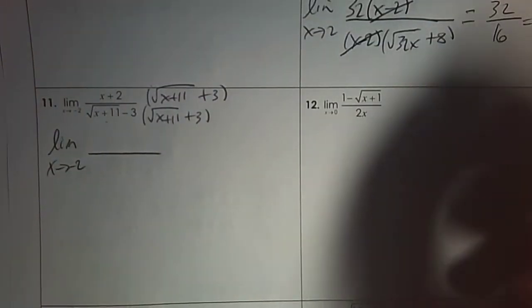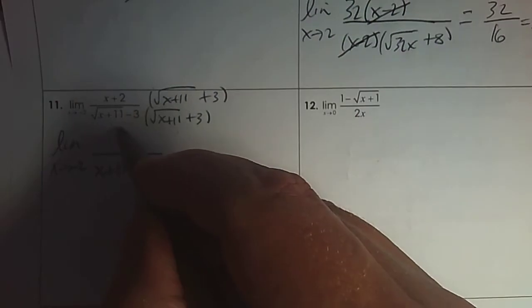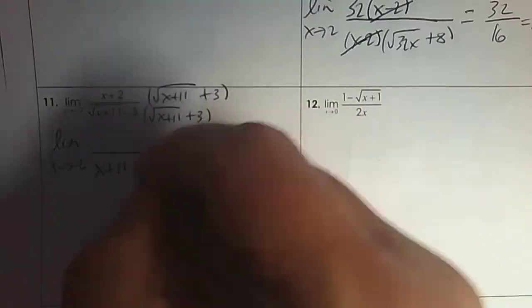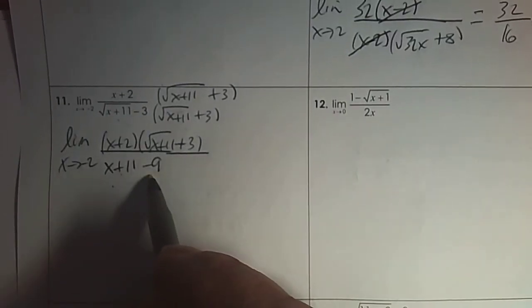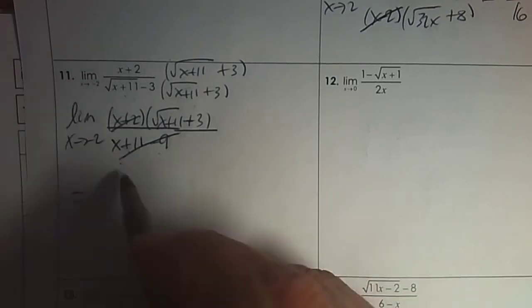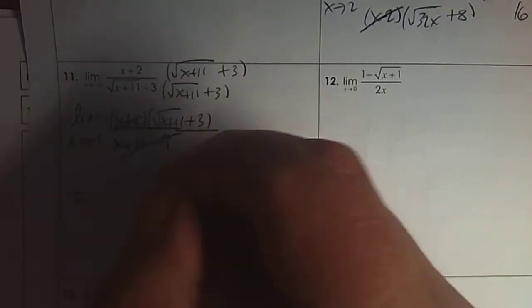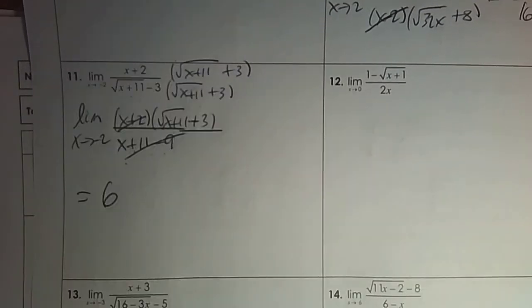Write the limit notation again. The denominator, multiply out: first times first, that's just x plus 11. Root x plus 11 times root x plus 11 undoes and leaves x plus 11. Negative 3 times 3 is negative 9. The numerator, put beside each other. Notice that 11 take away 9 is 2, so this is x plus 2 — they divide out. Then substitute: plug in negative 2. The square root of 9 is 3 plus 3, so the limit there is 6.